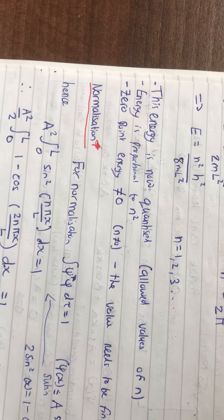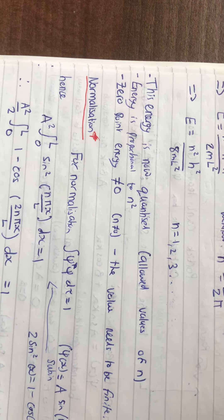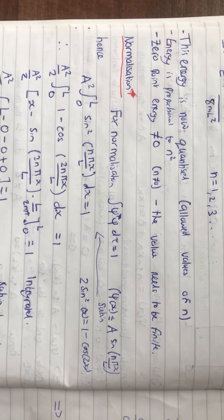So, zero point energy can't equal zero, which means n can't equal zero, because the value needs to be finite in order for the wave function to be allowed, as we mentioned earlier.